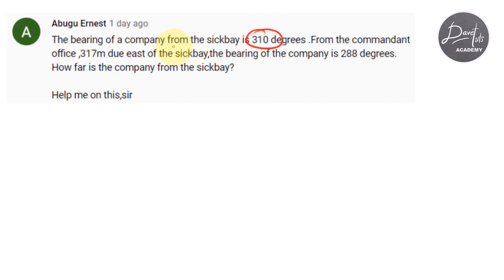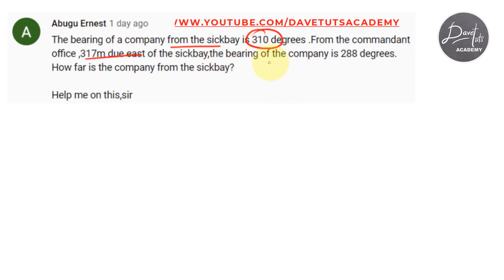Here we are told: the bearing of a company from the Seat Bay is 310 degrees. Furthermore, from the commandant's office, which is 317 meters due east of the Seat Bay, the bearing of the company is 288 degrees. We are to find the distance between the company and the Seat Bay.